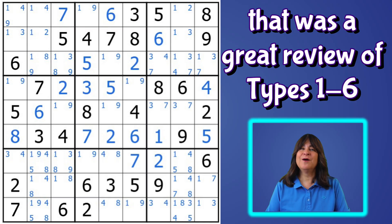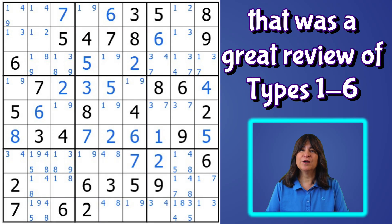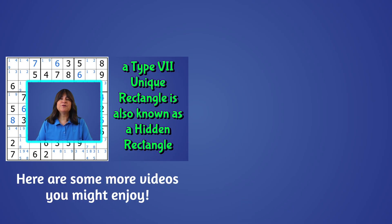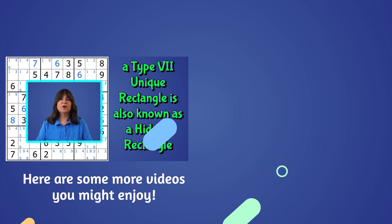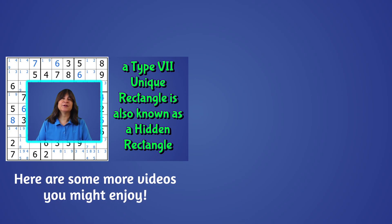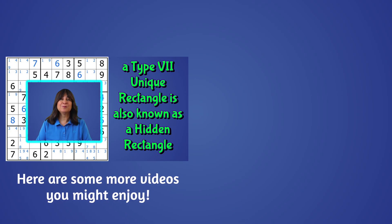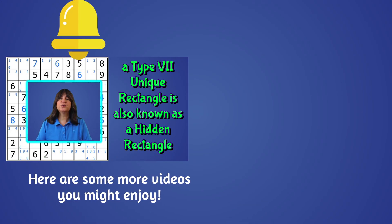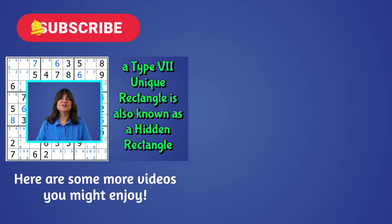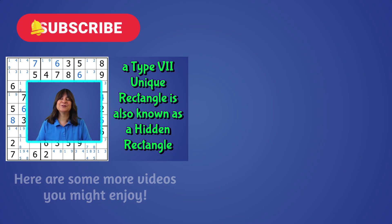Wow, that was a great review of the various types of unique rectangles, types one through six. How about a type seven? A type seven UR is also called a hidden rectangle, and I'm going to leave that for my next video, so please stay tuned for that. Make sure to subscribe to the channel so you don't miss when I upload it. Until then, thanks for watching, and I hope you learned something.